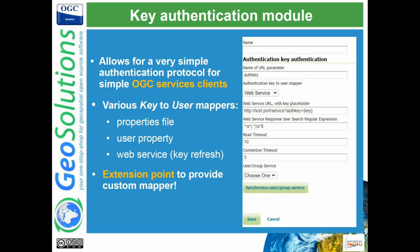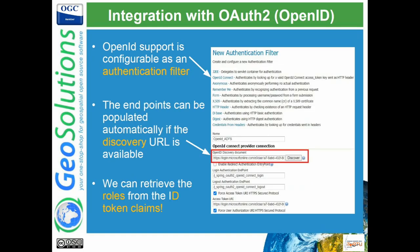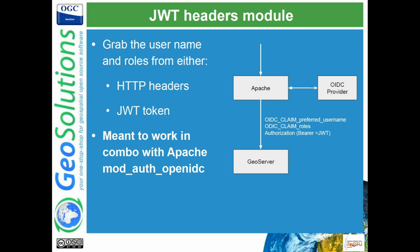Other authentication plugins: we have the key authentication module, which allows you to put a key in the URL to authenticate. API keys are actually pretty common for services like Google, and you can manage them so they are linked to a session and are short-lived, simplifying how the client interacts with the server. We have OAuth2 integrations of various types. Recently, GeoCat contributed the JWT headers module, which provides good interaction with Apache. Apache handles all the OpenID Connect work, then sets a few headers, and GeoServer reads them to figure out who the user is and what their roles are, without having to interact anymore with external services.